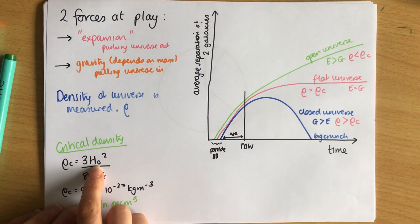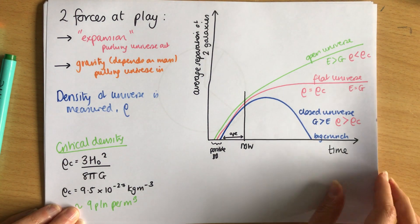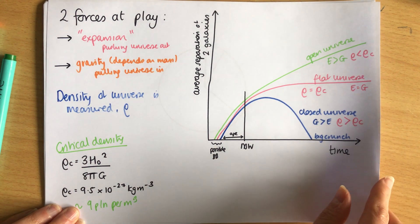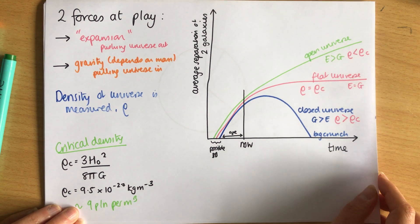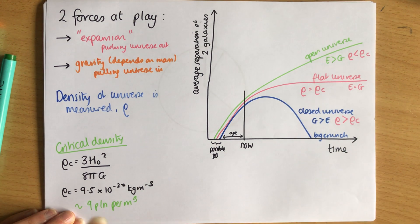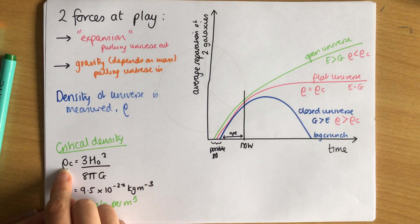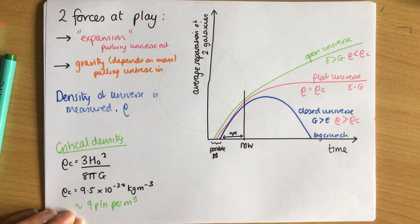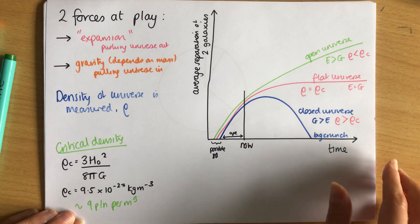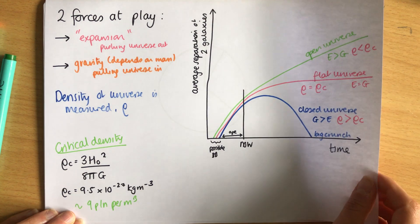It's really hard to pin this down. H₀ is difficult to find precisely, but there's an even bigger reason: it's extremely difficult to measure both the critical density and the actual density of the universe.